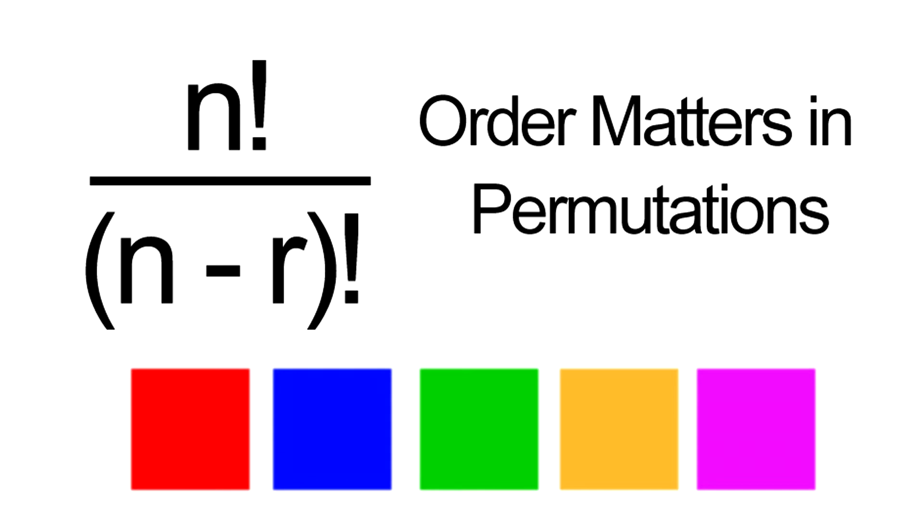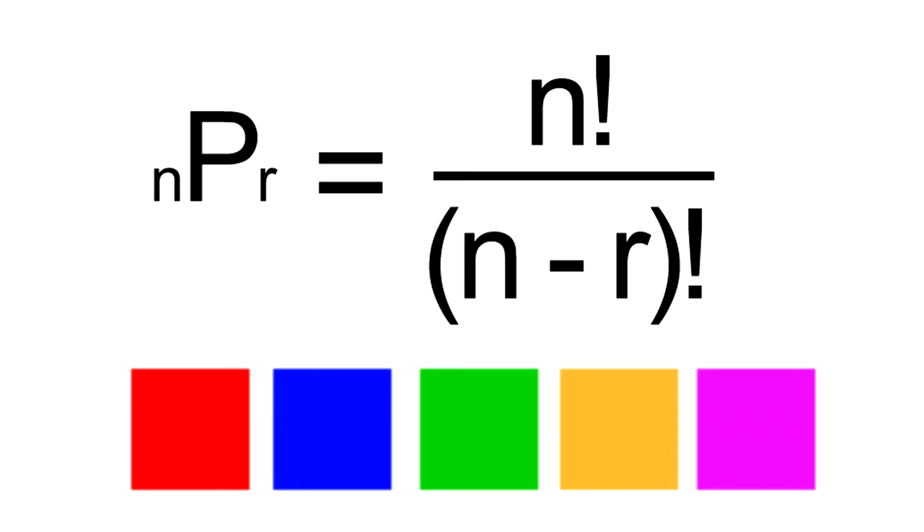Thus order matters in permutations. Permutation notation is also written as little n capital P and little r: nPr.